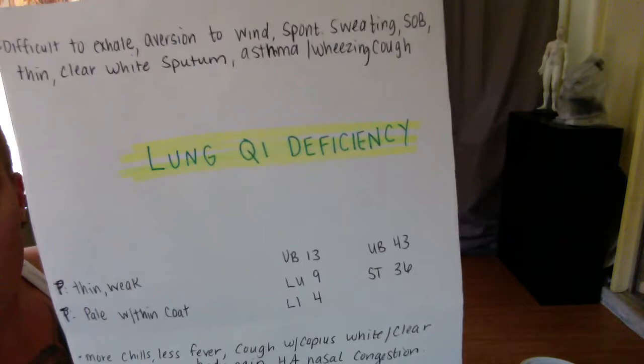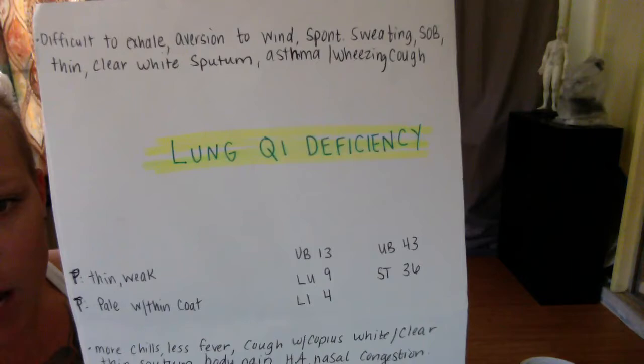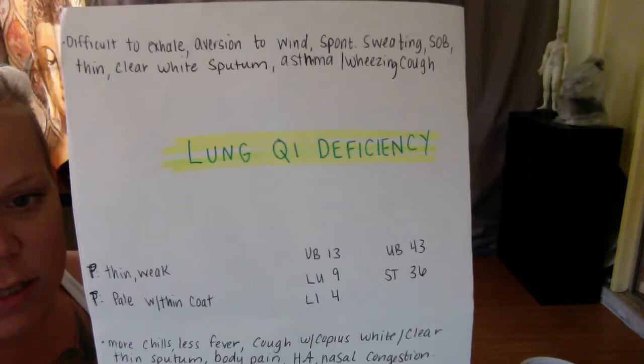Lung Chi deficiency pulse is thin and weak, tongue is pale with thin coat. Points combination: bladder 13, bladder 43, lung 9, LI4, and stomach 36.